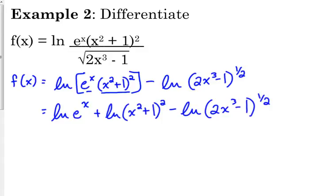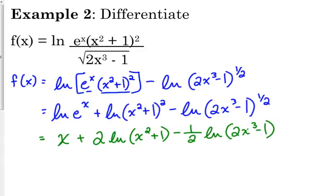Alright, and this should be our last step of simplifying here. The natural log of e to the x. We can simplify that, can't we? What is that equal to? Just x. It's just equal to x. The natural log and the e cancel each other out. That's just x. Plus, we can bring down that exponent to be a coefficient. So, 2 natural log of x squared plus 1 minus 1 half natural log of 2x cubed minus 1.